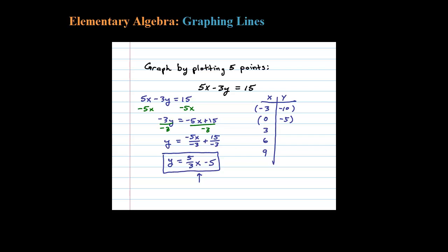That'll be my x-intercept. When I substitute in 6, 3 goes into 6 twice, 5 times 2 is 10 minus 5, that leaves me with 5. And if there's any kind of pattern here, the next one should be positive 10. Plugging in 9, 3 goes into 9 three times, 3 times 5 is 15 minus 5 is certainly 10. So here's five ordered pairs which I'll go ahead and plot right now.